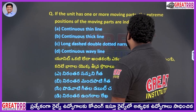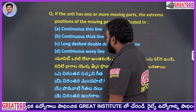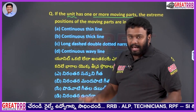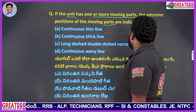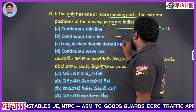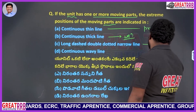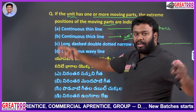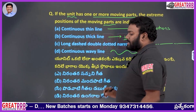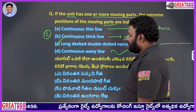If the unit has one or more moving parts, the extreme positions of those moving parts are indicated by: A) continuous thin line, B) continuous thick line, C) long dash double dotted narrow lines, D) continuous wavy line. Continuous thin lines are for projections; continuous thick lines are for outlines; continuous wavy lines are for breaks. The answer is option C, long dash double dotted narrow lines.